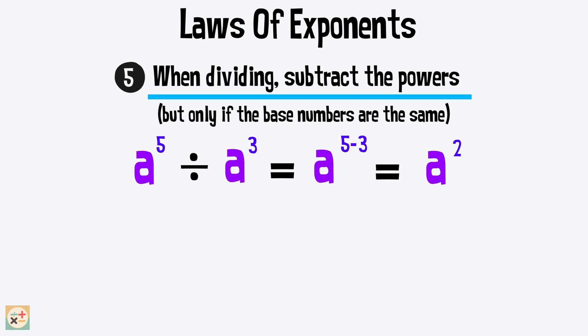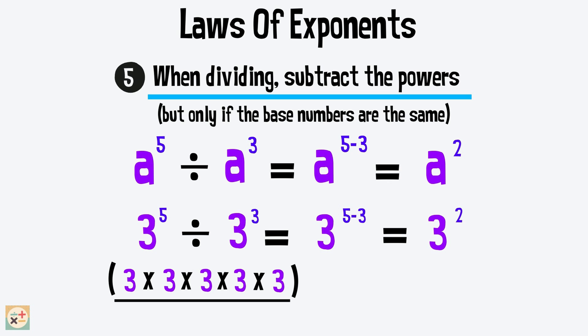Let's have a look at an example. We can see that if we rewrite the expression out using a fraction and without exponents, we can cancel down the digits until we have 3 to the power 2.